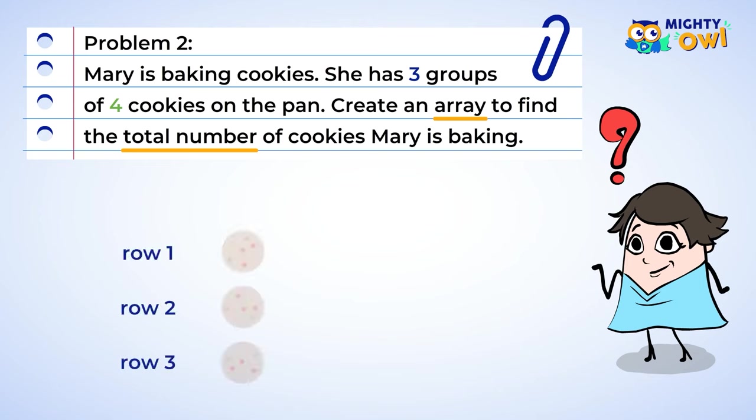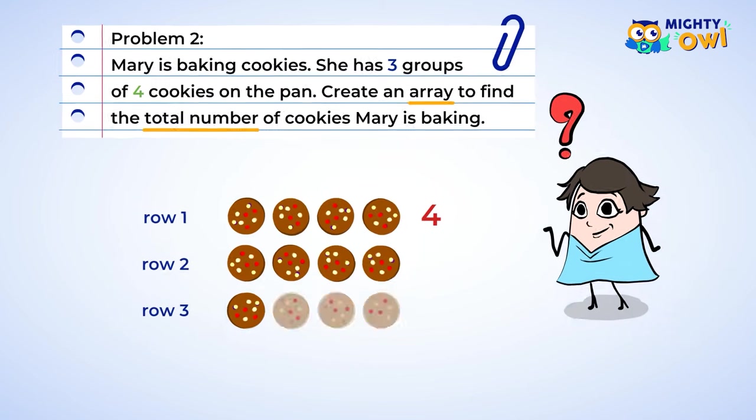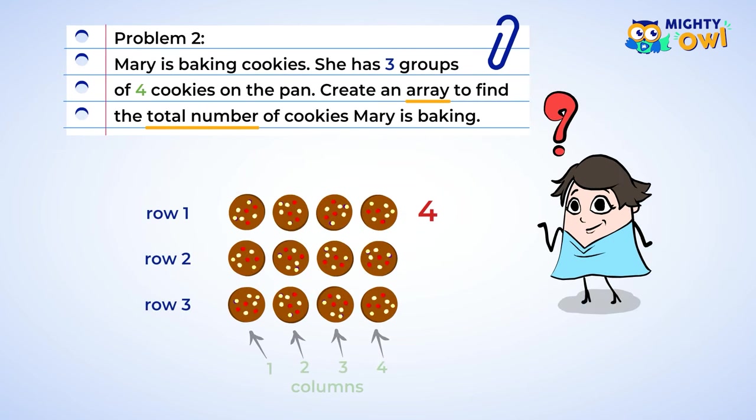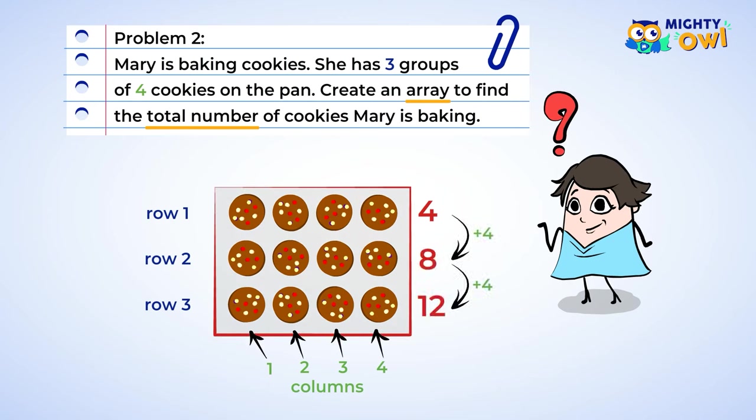Okay, you have three groups, which means your array will have three rows. Keep going. Each group has four, so you create four columns. Finish filling out your array, and now you can find the answer. Four, eight, twelve. Mary baked twelve cookies.